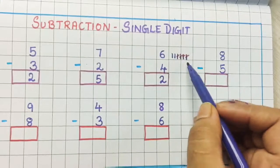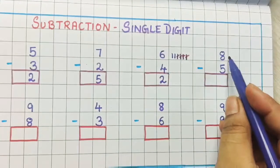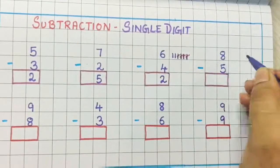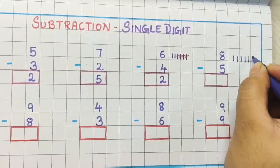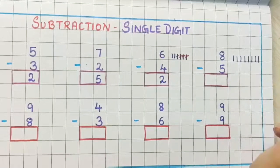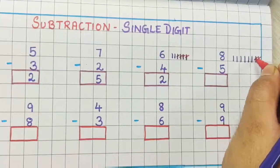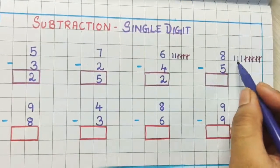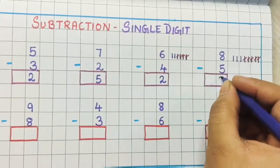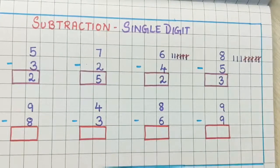By drawing sticks or drawing circles you can do the subtraction. Now let's see 8 minus 5. I am drawing 8 sticks: 1, 2, 3, 4, 5, 6, 7 and 8. Now I have to remove 5 from that: 1, 2, 3, 4 and 5. Now how many are left? 1, 2 and 3. So the answer is 3. It is very easy if you make these sticks and you practice.